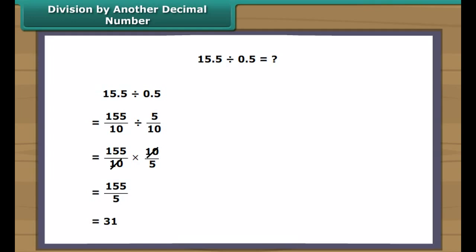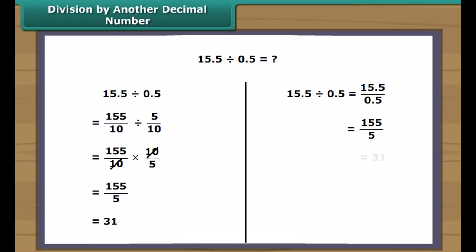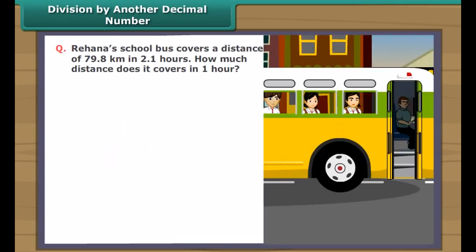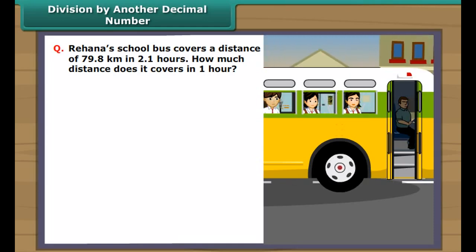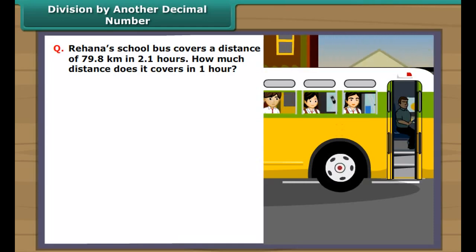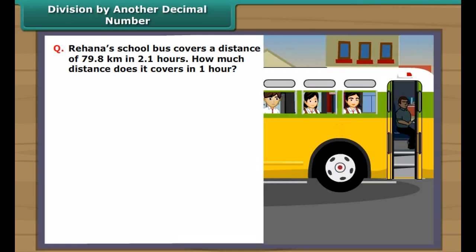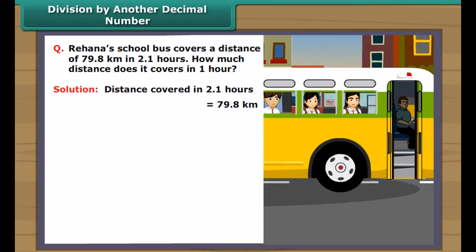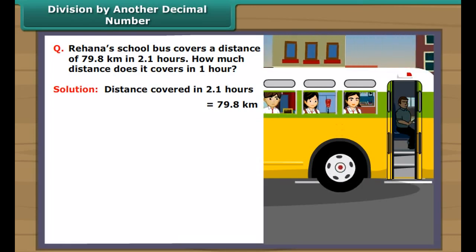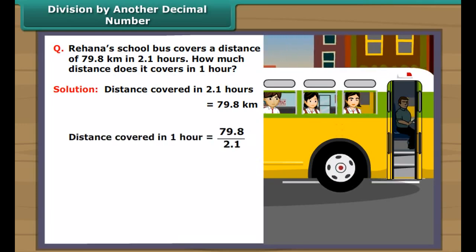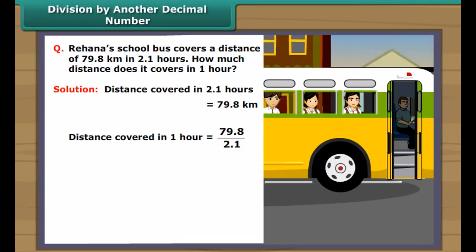Division by another decimal number: 15.5 can be written as 155/10, and 0.5 as 5/10. We get 155/10 × 10/5, which simplifies to 155/5 = 31. We observe the decimal place was shifted right in 15.5 to make it 155, so there was a corresponding shift in 0.5 to make it 5. Thus, 15.5 ÷ 0.5 can be written as 155 ÷ 5, giving 31 as the answer.